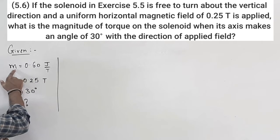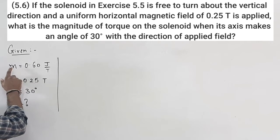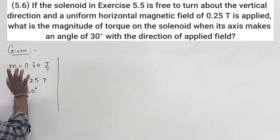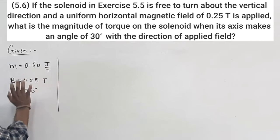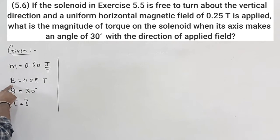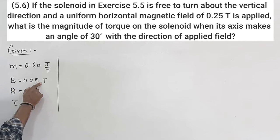The magnetic moment is 0.6 joule by tesla and this magnetic field B is equal to 0.25 tesla.